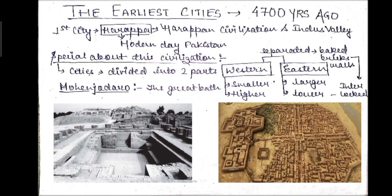At that time, cities were divided into two parts: the western part, which is called the citadel — that was the smaller and higher part — and the eastern part, which was larger and lower, used for general settlement. The eastern part was larger and lower, while the western part, also called the citadel, was smaller and higher.